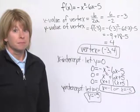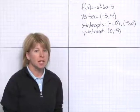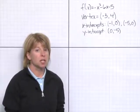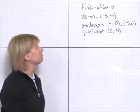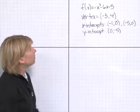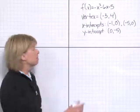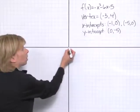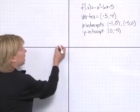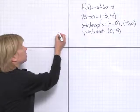Now we'll construct the graph. We just found the vertex and the intercepts for our quadratic function, and now we're going to graph it. We have a vertex of (-3, 4). So from the origin, I go left 3 and up 4 to find the vertex.